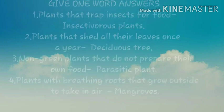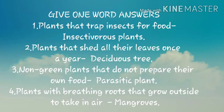Give one-word answers. Plants that trap insects for food: insectivorous plants. Plants that shed all their leaves once a year: deciduous plants. Non-green plants that do not prepare their own food: parasitic plant. Plants with breathing roots that grow outside to take in air: mangroves.